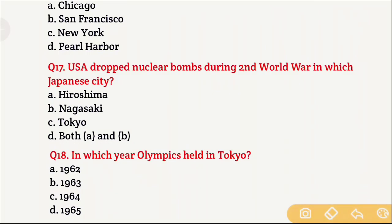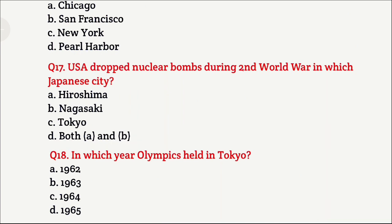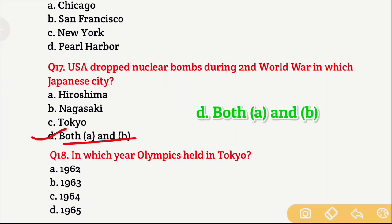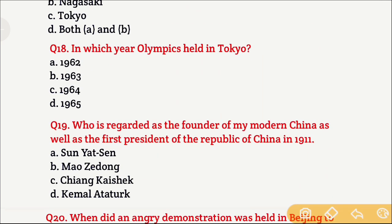Question 17: The USA dropped nuclear bombs during the Second World War on which Japanese cities? Option A is Hiroshima, Option B is Nagasaki, Option C is Tokyo, and Option D is both A and B. The right answer is Option D — both A and B — the USA dropped nuclear bombs on both Hiroshima and Nagasaki.